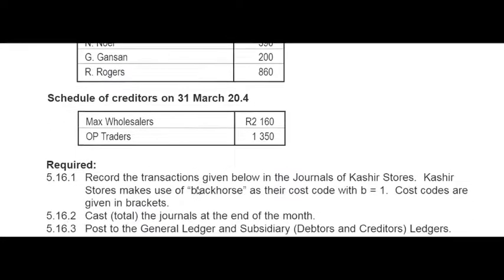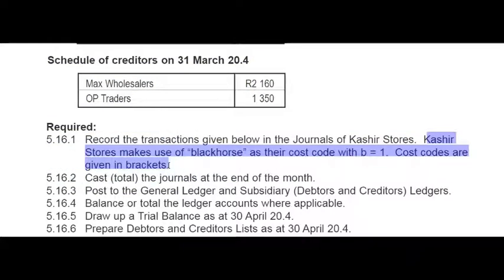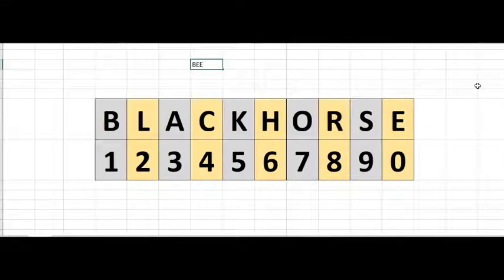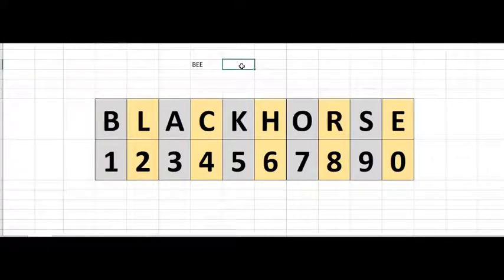Cashew Stores makes use of Black Horse as their cost code, with B equals 1. Cost codes are given in brackets, so you didn't have to do any cost of sales calculations yourself. Every letter in the word 'Black Horse' represents a number starting with 1 going up to 0. For example, if the cost price is BEE, then B=1 and E=0, so BEE equals a cost price of 100 rand.